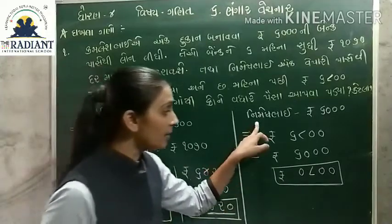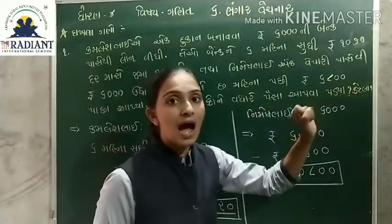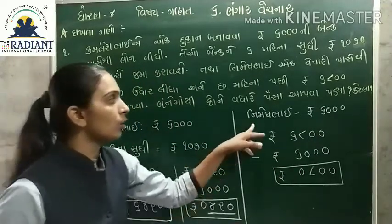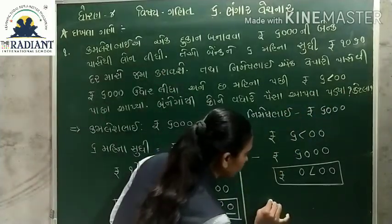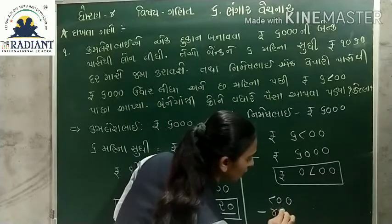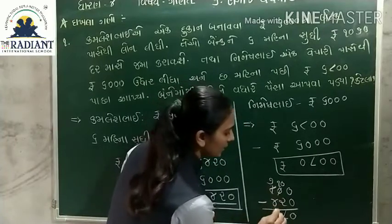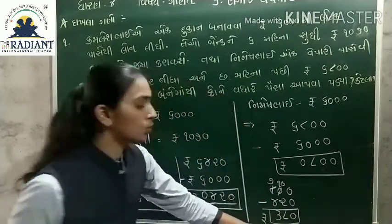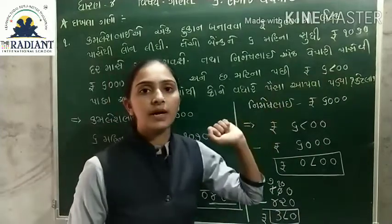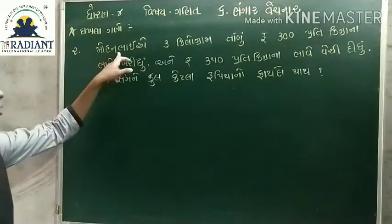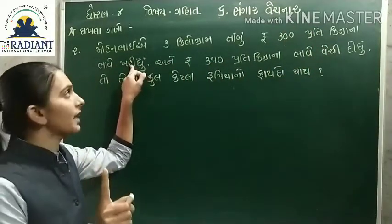કમલેશ ભાઈ એ 420 રૂ. વ્યાજ ચૂકવ્યું, અને નિમેશ ભાઈ એ 800 રૂ. વ્યાજ ચૂકવ્યું. એટલે નિમેશ ભાઈ એ વધારે પૈસા આપવા પડ્યા.